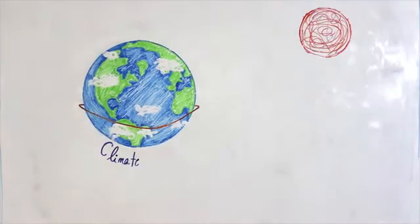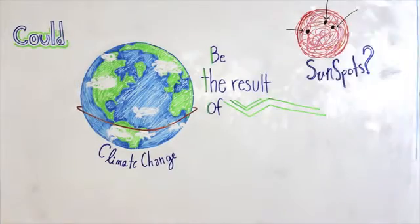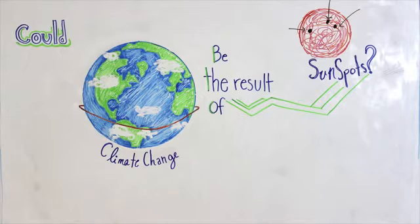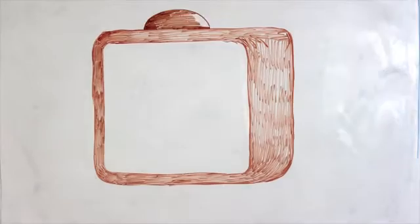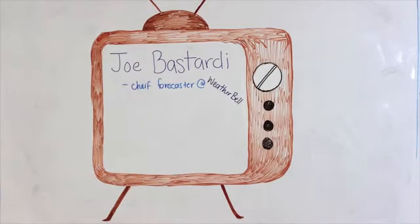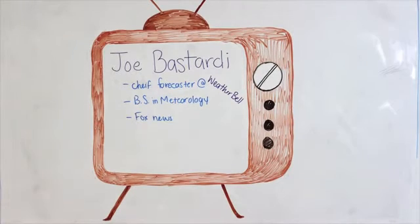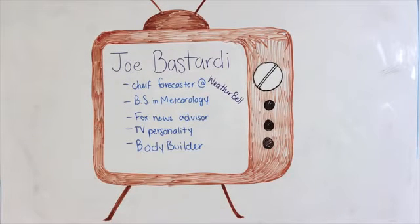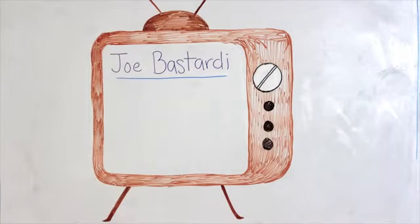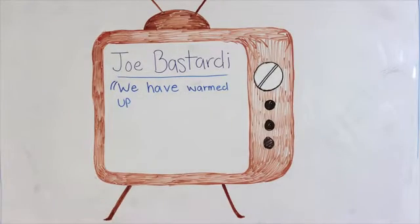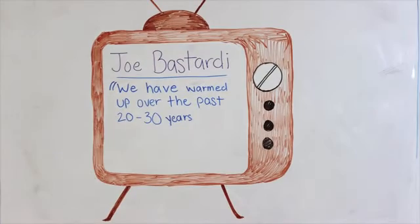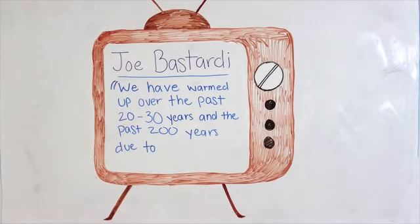Some people claim the Earth's global average temperature is rising only because of these naturally occurring solar cycles. Let's see how one of these arguments holds up based on our scientific understanding of solar variability. Joe Bastardi is the chief forecaster at WeatherBell and has a bachelor's degree in meteorology from Penn State. He has been a popular personality on a variety of outlets, including Fox News and the Colbert Report. Bastardi acknowledges the climate is changing, but claims solar variability is solely responsible. In one statement he made to a reporter for Fox News, Bastardi said, "We have warmed up overall over the last 20 to 30 years, over the last 200 years because of sunspot cycles — you can trace it to the sunspot cycles."